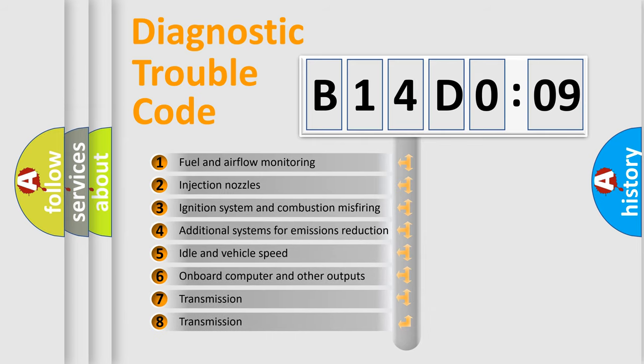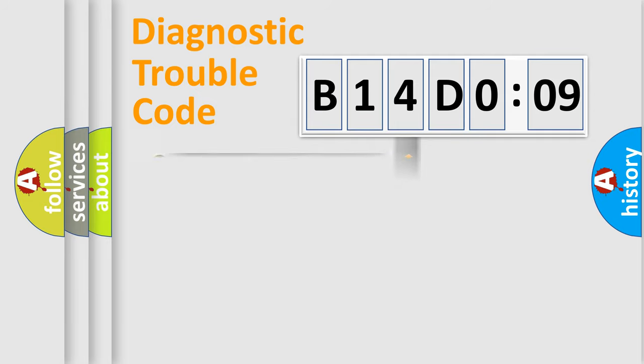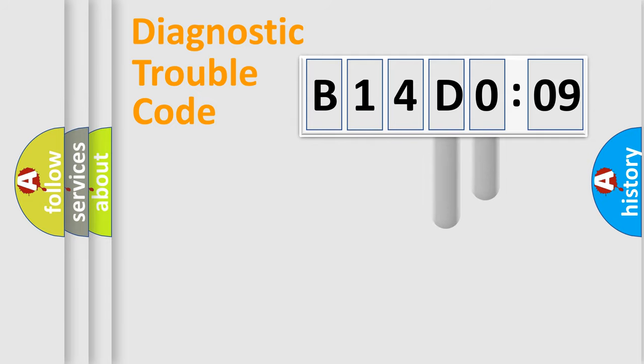The third character specifies a subset of errors. The distribution shown is valid only for standardized DTC codes. Only the last two characters define the specific fault of the group.